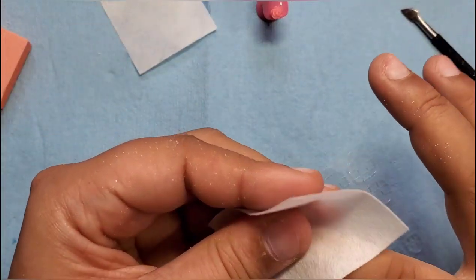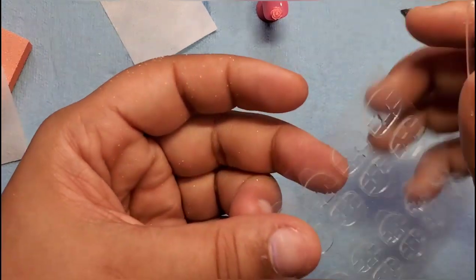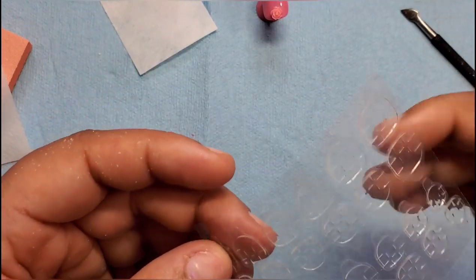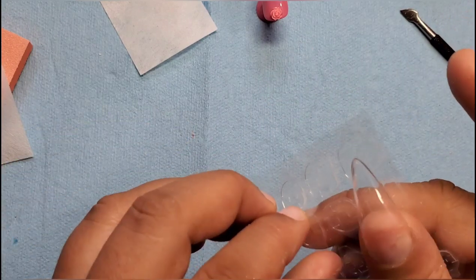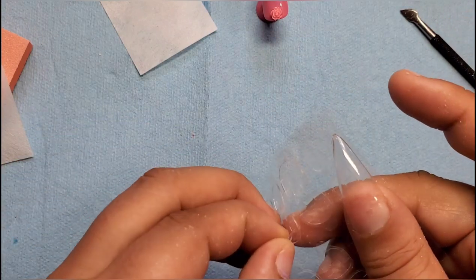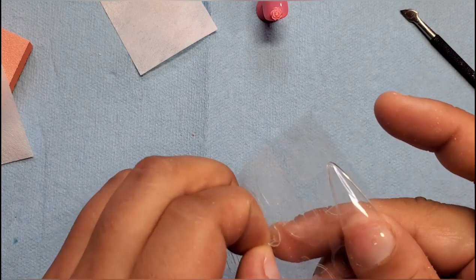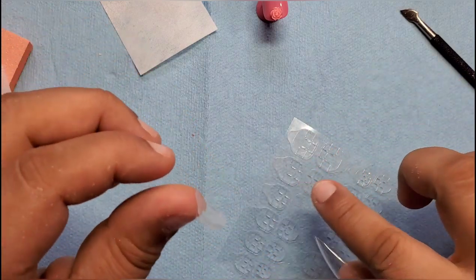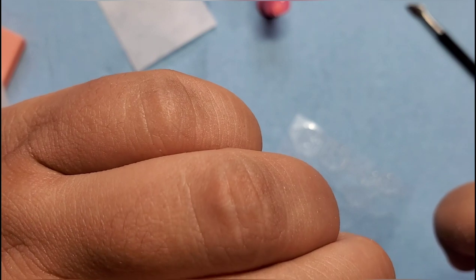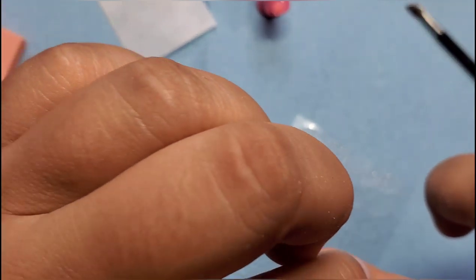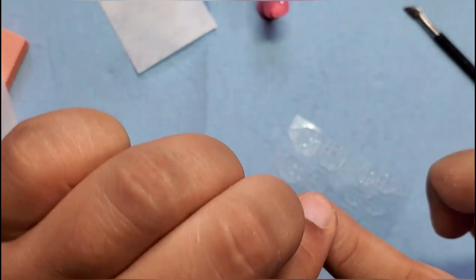Same thing though, you want to prep your nail, dust off any dust, use your alcohol wipe. Then you would find one of these that fits your nail best. I've pulled this off, it has a little tab. You kind of stick that in the middle of your nail.